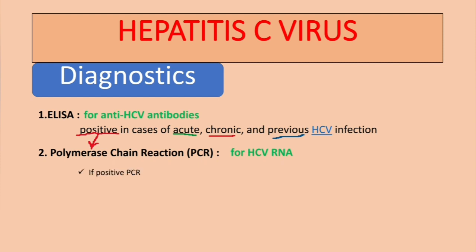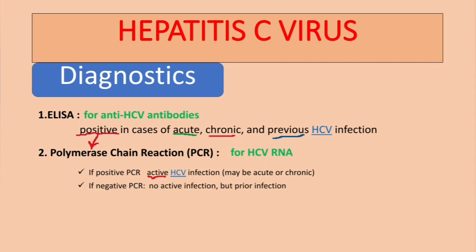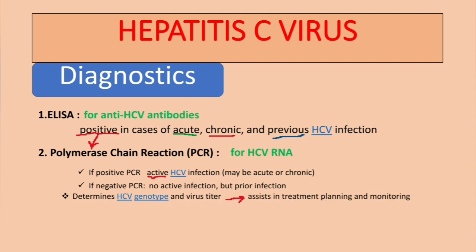PCR is used to detect HCV RNA. If the result is positive, it means there is active HCV infection, which may be acute or chronic. If the result is negative, it means there is no current infection but there was a prior one — this may be because viral titers are still low and undetectable. PCR can also determine the HCV genotype and virus titer, which assists in treatment planning and monitoring.